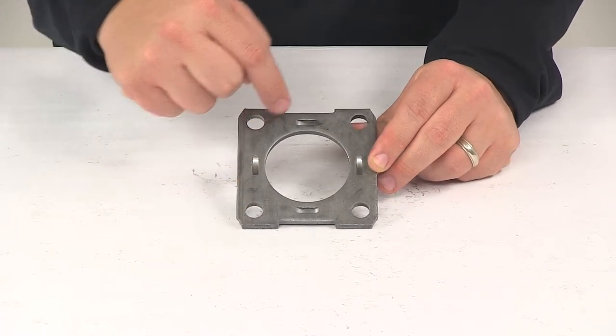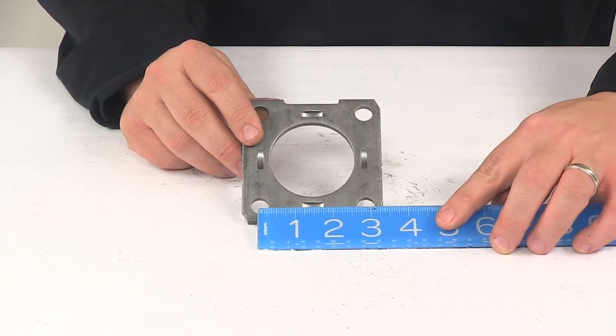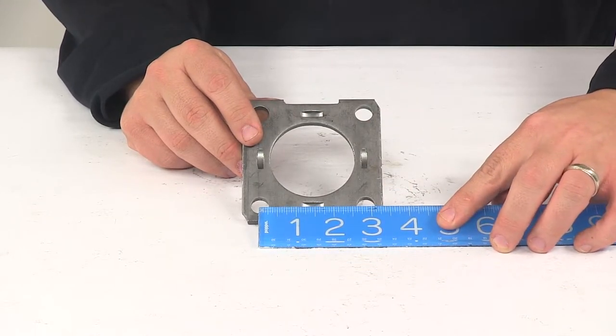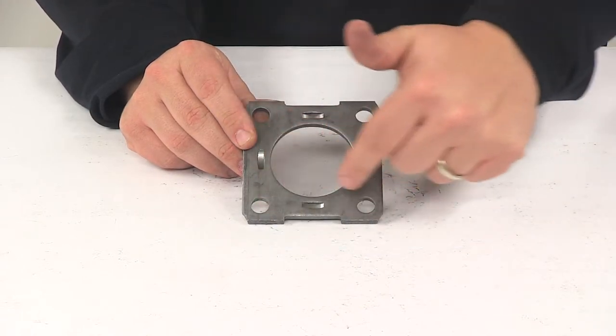You can see it contains four bolt holes. These are separated from one another on center by 2 and 7/8 of an inch. That's the same separation for each one—a square design.